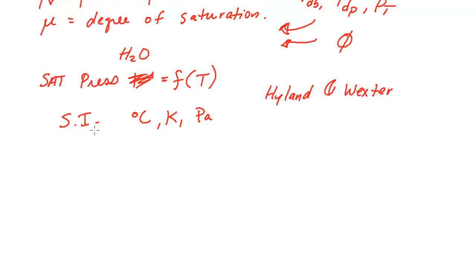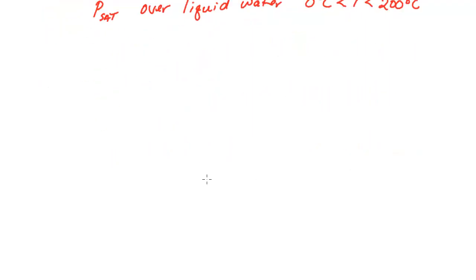We'll begin with the saturation pressure over liquid water, and this is valid from the range of zero degrees C all the way up to 200 degrees C, which is much higher than most HVAC applications, but we can apply it up to that level. And what they found as a relation is the natural log of the saturation pressure, and remember this is all for water, is equal to,